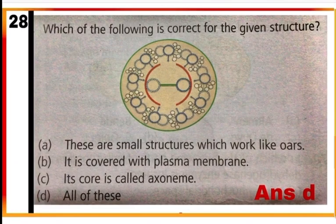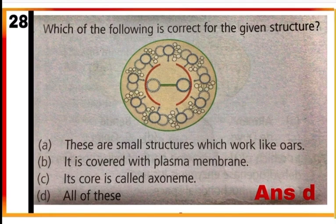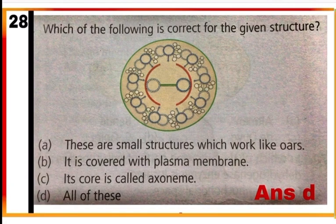Question 28: Which of the following is correct for the given structure? Option D — all of these. This structure is a section of cilia or flagella, covered with plasma membrane. Their core is called the axoneme. The axoneme has nine pairs of doublets of peripheral microtubules and one pair of centrally located microtubules. Mark D as the correct answer.